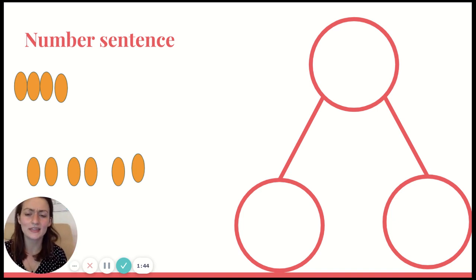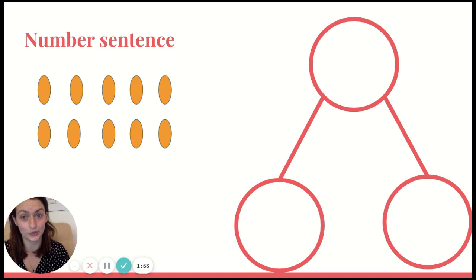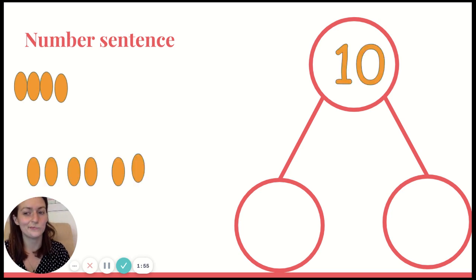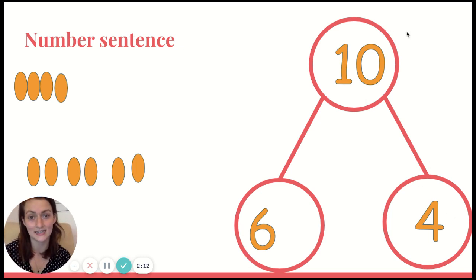So now, how would I put that in a number bond? Well, we know that we have 10 jelly beans all together because that was the very beginning of our story. But I said I had 4 in one hand and I said I had 6 in the other. So I can put 6 for one of my hands and 4 for the other one of my hands. Remember, these are the parts. So 6 is one of the parts and 4 is the other part. But 10 is how many I have all together.